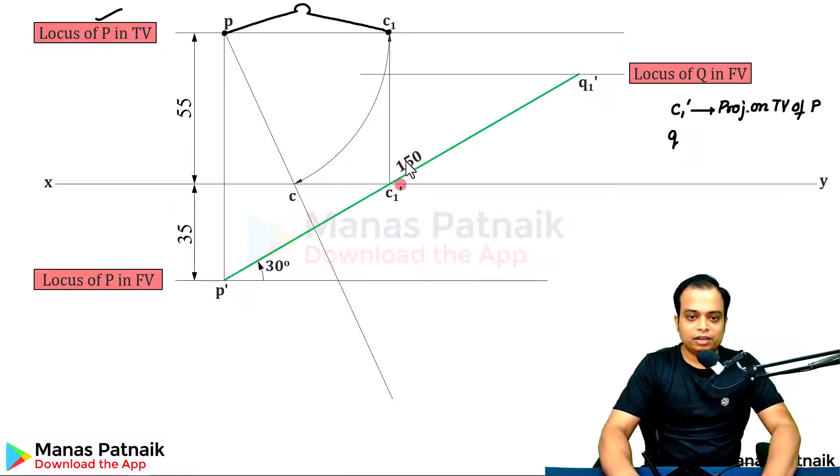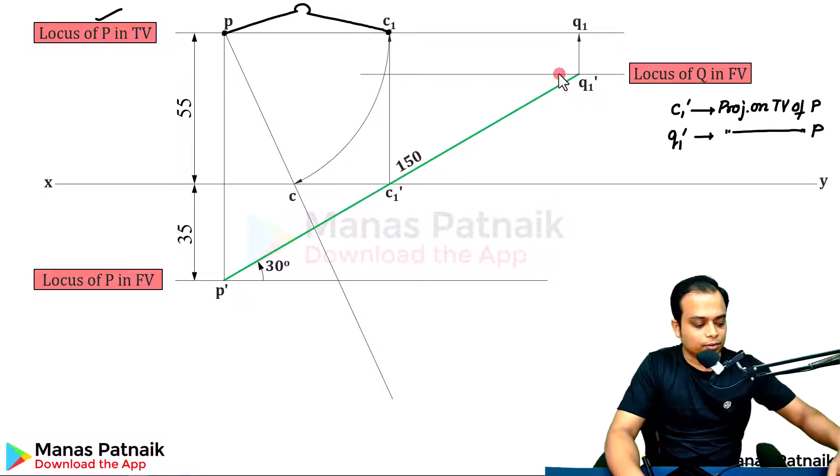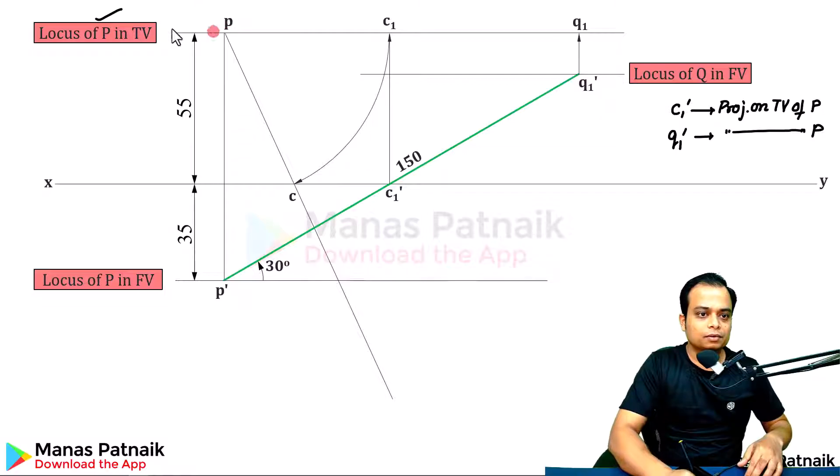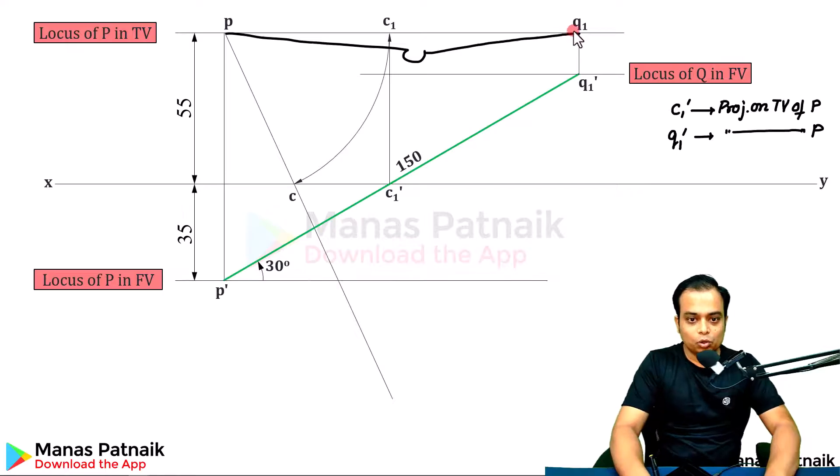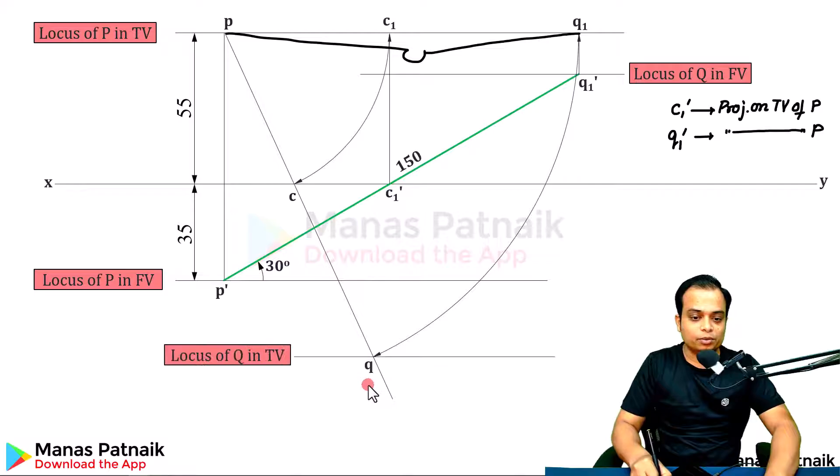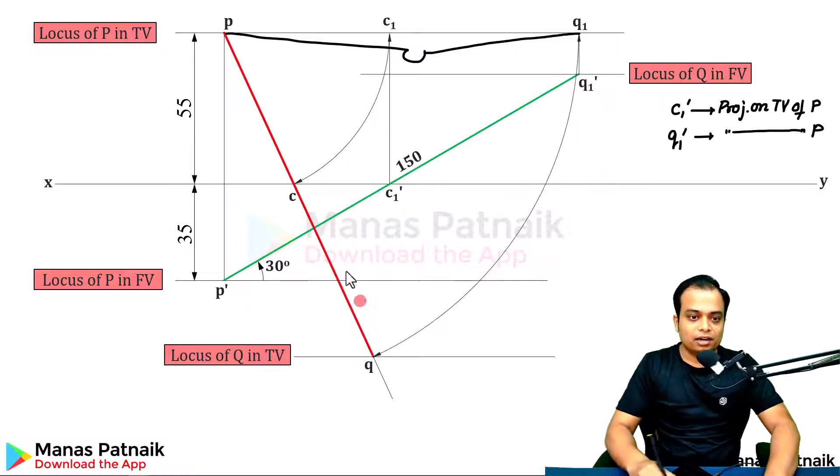Let us start with Q1 dash. Again, the same thing. Project on top view of P. Where is the top view of P? The top view of P is right here. Project Q1 dash. Let's call this Q1. Take this much as the radius using your compass. Rotate. You are going to intersect this line, this construction line somewhere here. This is your exact location of point Q. I've also made the locus line simultaneously. This is your final top view. These are non-dashed letters P, C, and Q.